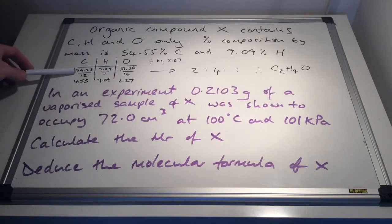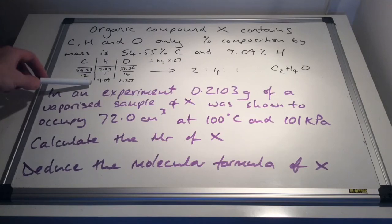We then divide all of these by the MR, so 12 for carbon, 1 for hydrogen, 16 for oxygen, and that gives us the number of moles, just be careful with your significant figures, minimum of 3, rounded correctly, so 4.55 to 9.09 to 2.27.